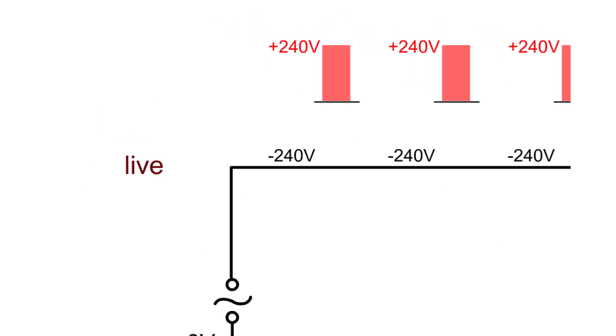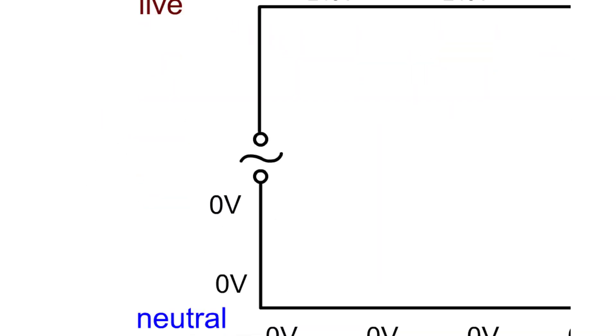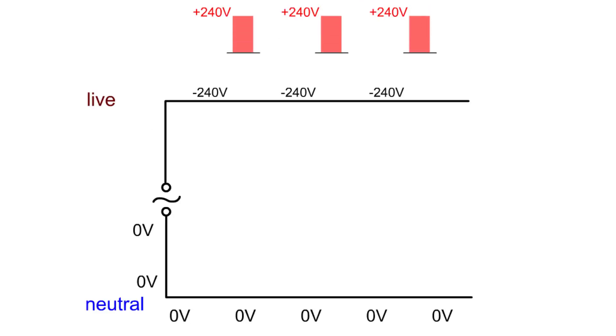The wire where the voltage changes is called the live. The wire where the voltage stays the same is called the neutral. As long as there is no fault then the current in the live is always the same as the current in the neutral.